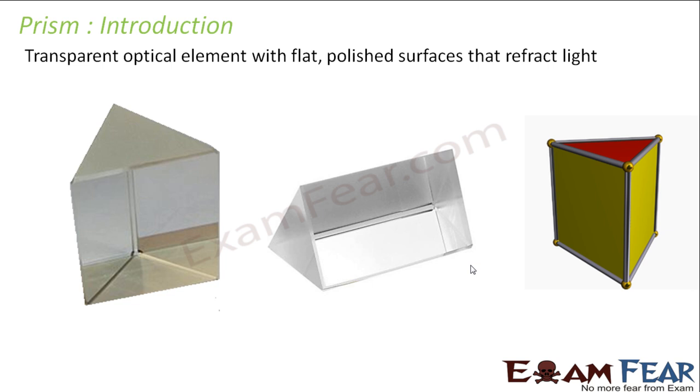Prism is a transparent optical element with flat polished surfaces that refract light. You would have seen these prisms in your school laboratories. It is made up of glass but the structure looks somewhat like this. It has got two triangular surfaces and three somewhat rectangular surfaces and all of them are transparent and each of these surfaces are capable of refracting light.